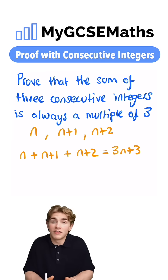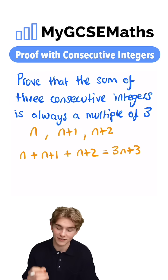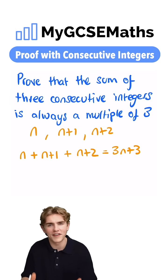Now, when it comes to showing that this is a multiple of three, we just need to show that it has a factor of three. How can we do that? We can factorize it.